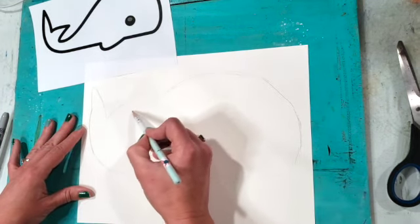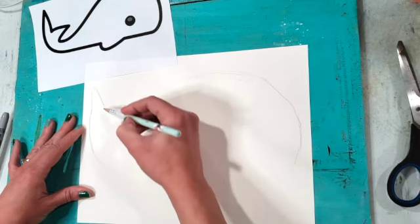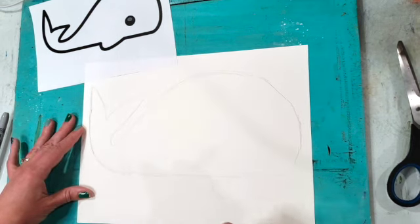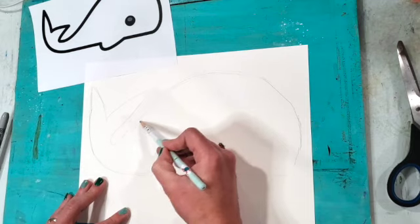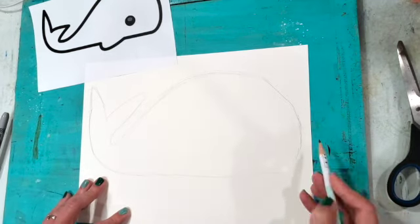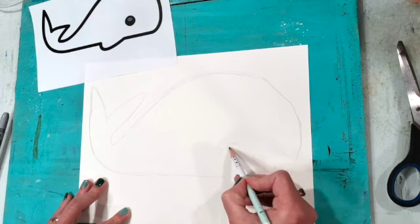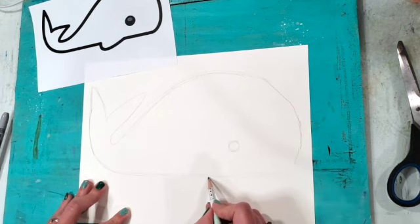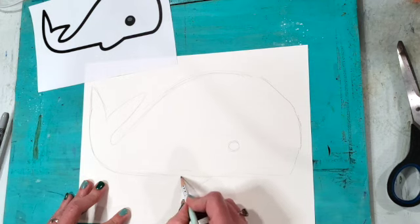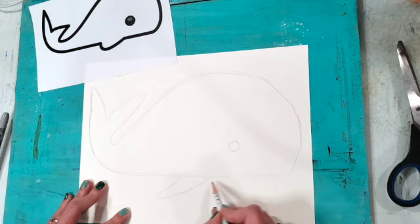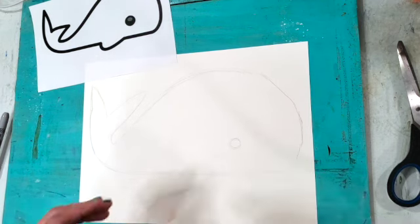At this point too if there's something that I want to change with my animal picture I can always change it. It doesn't have to look exactly like the picture that I'm looking at. I'm also going to show where the eye is on the whale and I'm going to add a fin. I'm going to make mine just a little bit longer than the one in the picture.